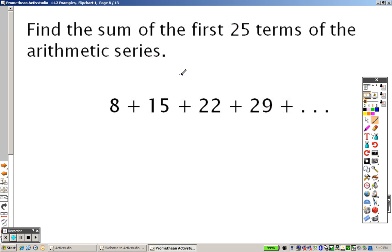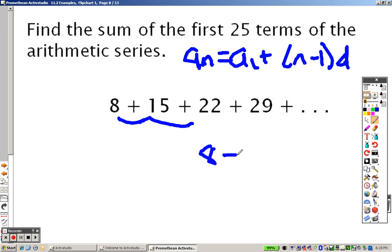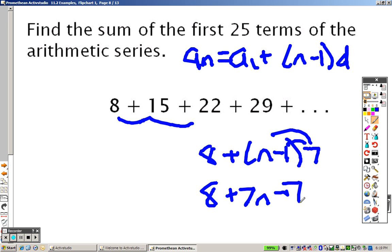Once again, to find the sum here, I need to find the pattern first because I need to know what the first and last term is. So I know what the first term is, but I do not know what the last term is, so let's figure out what the last term is. That's N minus 1 times d. The first term is 8, N minus 1, and it's going up by 7 every time, so I distribute that through. You get 8 plus 7N minus 7. When I combine my like terms, I get 7N plus 1.